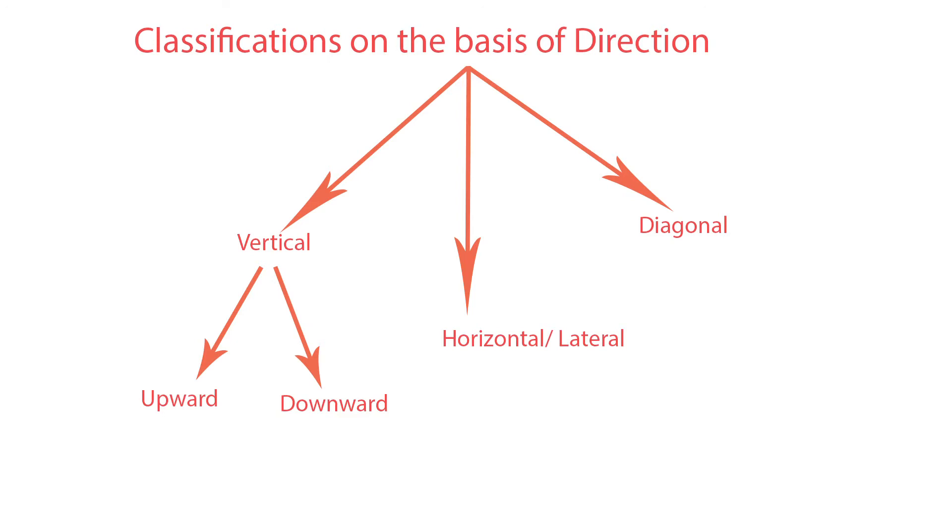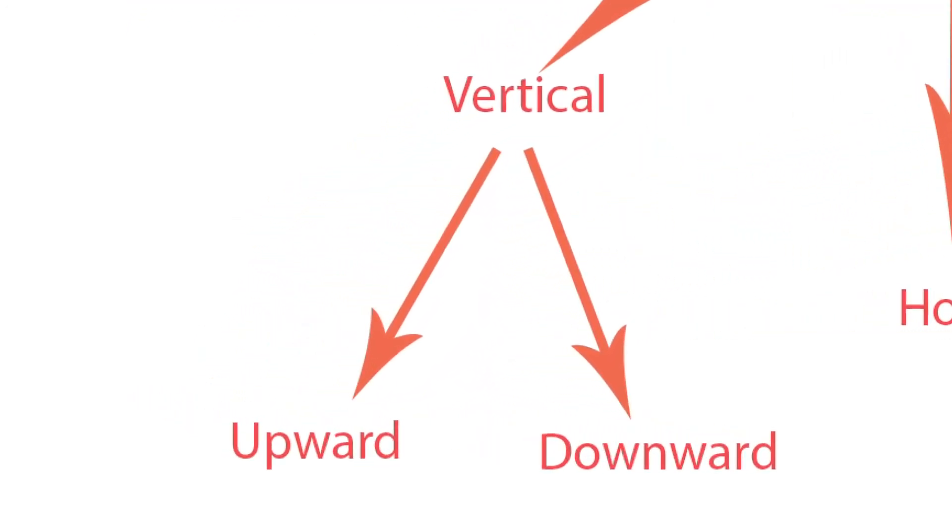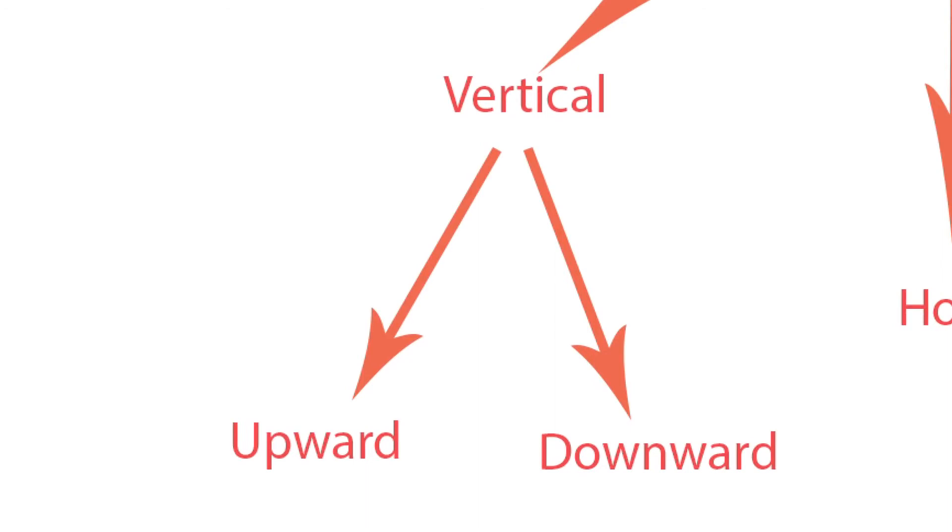Vertical communication is basically formal communication. It has two types: downward communication, which is top to bottom — from top management downward, carrying notices, rules, and instructions; and upward communication, which is bottom to top — from the lower section to top management, carrying suggestions and complaints.